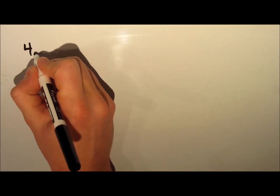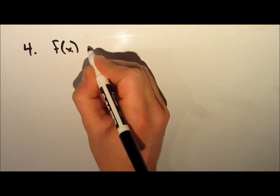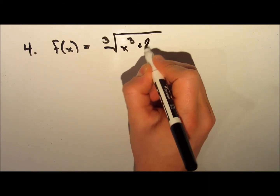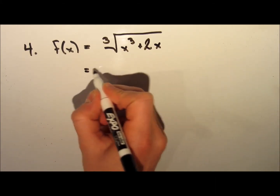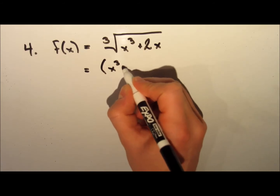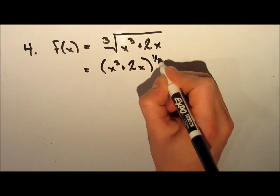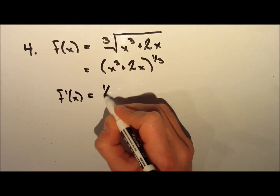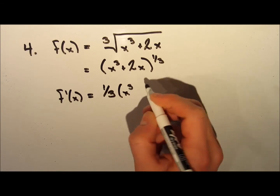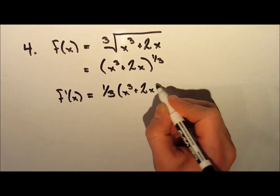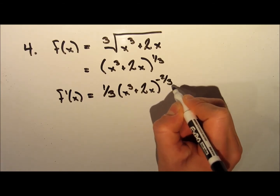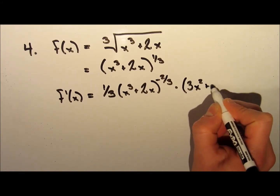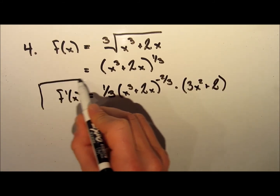Let's go through one more example. The function we're taking the derivative of is f of x equal to the cubed root of x cubed plus 2x. We're going to rewrite this as x cubed plus 2x to the exponent one third. The derivative is: bring the one third down in front, keep the inside x cubed plus 2x the same, subtract 1 from the exponent to get negative two thirds, and multiply by the derivative of the inside which is 3x squared plus 2. And that's the derivative.